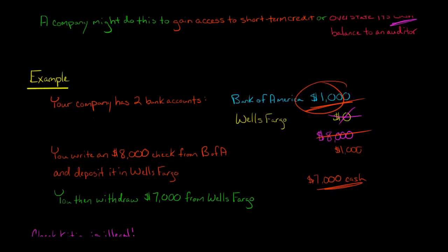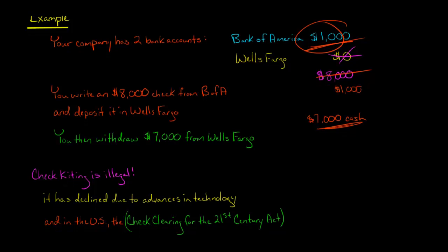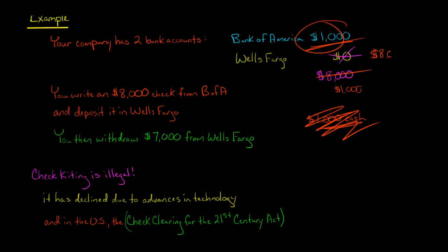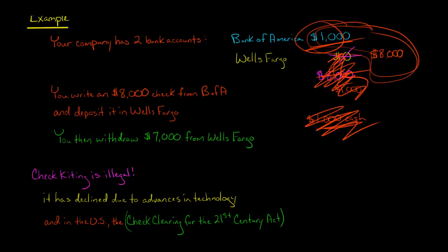Another use of check kiting is to deceive an auditor. If you've overstated your cash balance and an auditor is coming, you can write the $8,000 check from Bank of America and show $8,000 now sitting in Wells Fargo — without ever withdrawing it. You then tell the auditor, 'I have $9,000 in my accounts,' and you can point to both balances to back it up. So it's not always about accessing short-term credit; sometimes it's just about tricking someone into thinking you have more cash than you do.